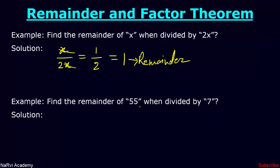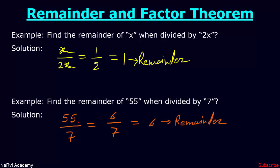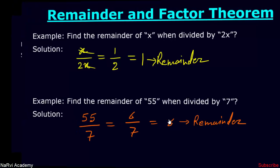Find the remainder of 55 when divided by 7. If we divide 55 by 7, we will get 6 as a remainder, because 7 sevens are 49 and the remainder is 6. So here, 6 is the remainder.